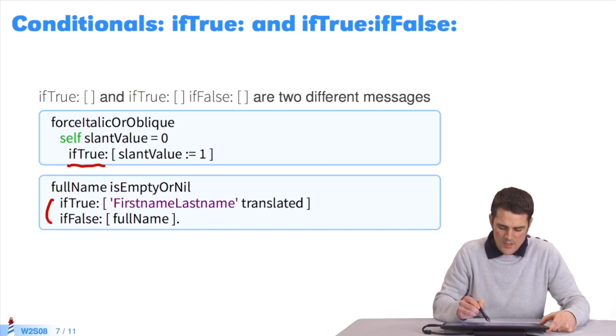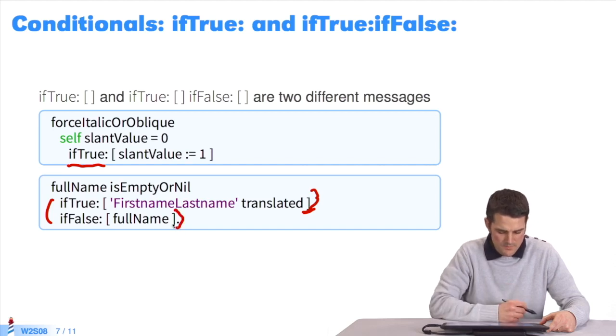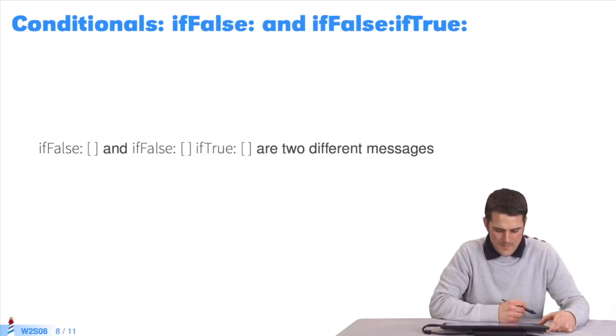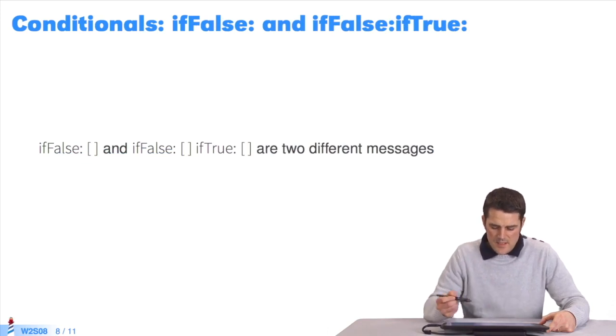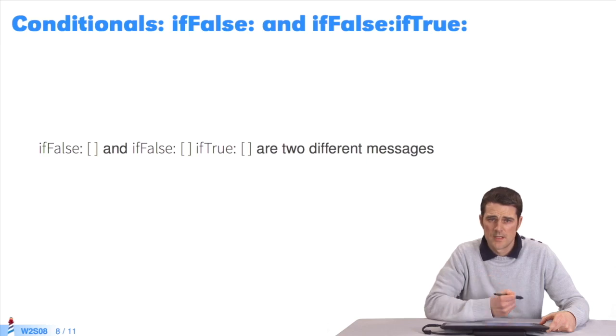In this example, there's one block to execute if the receiver Boolean is true, and another if it is false. There are two different messages. It's the same with ifFalse: when it comes to the classes Boolean, True, and False.